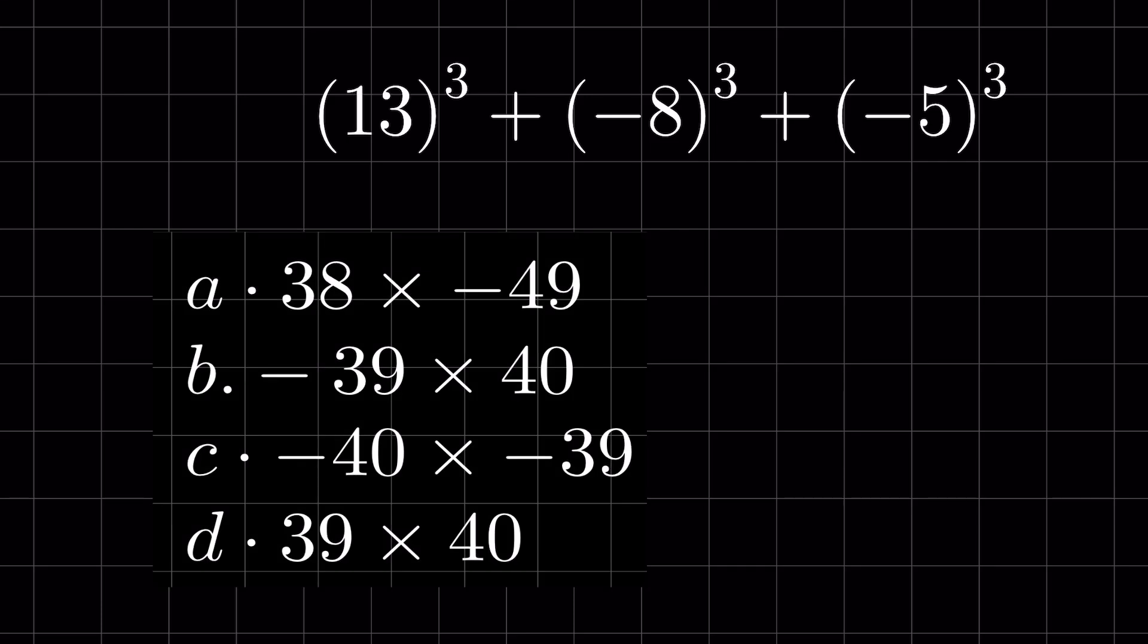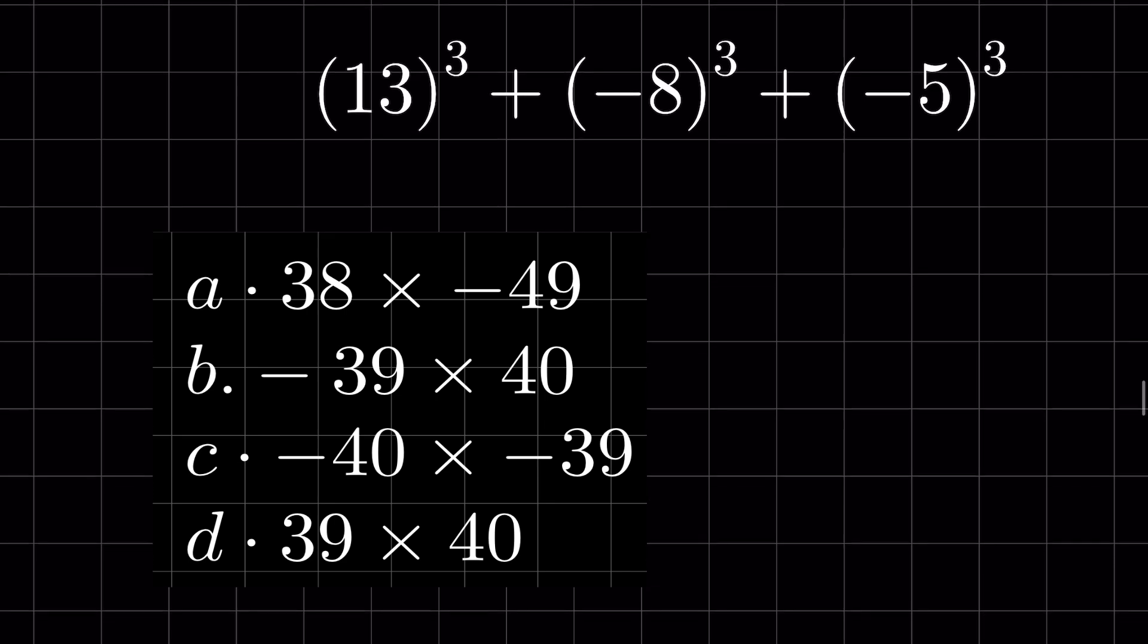13³ + (-8)³ + (-5)³. What is the answer? Options are: a) 38 × -49, b) -39 × 40, c) -40 × -39, and d) 39 × 40. We are not allowed to use